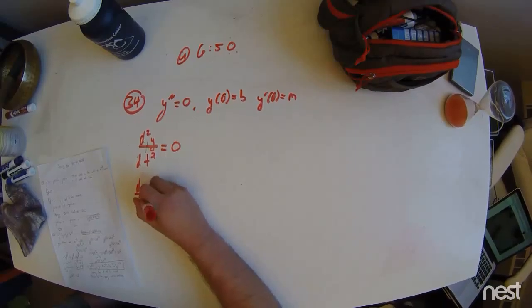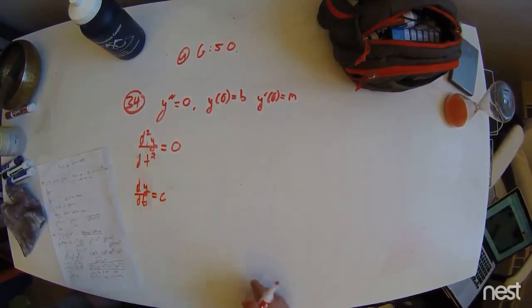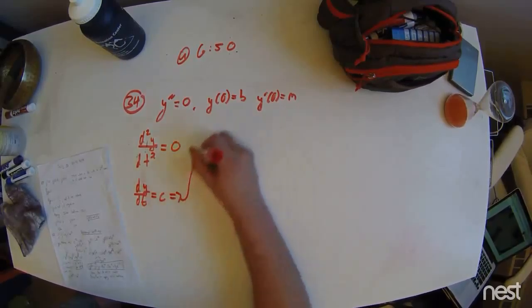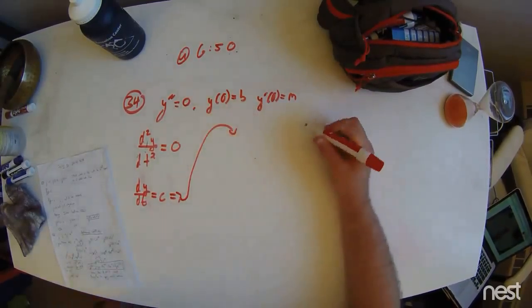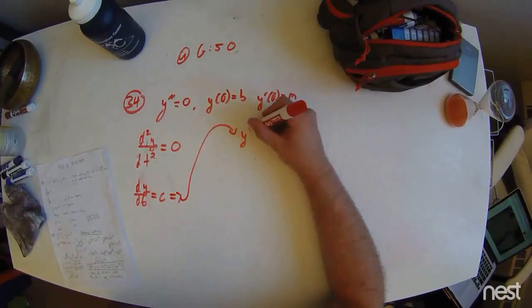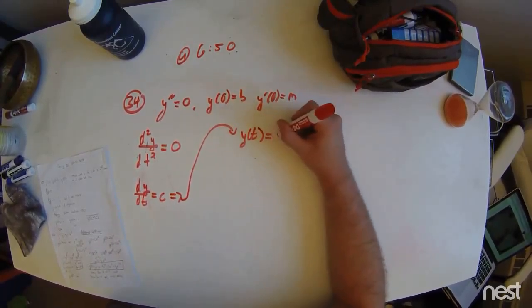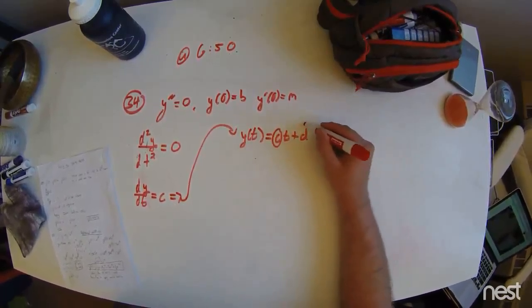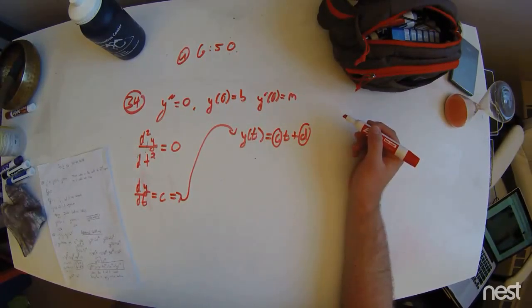dy dt equals some constant c. Now, doing that trick again, we have y of t equal to ct plus d, where c and d are constants of integration.